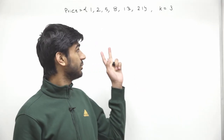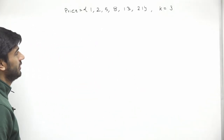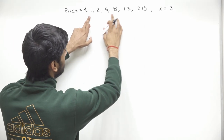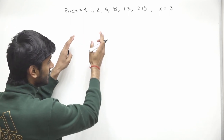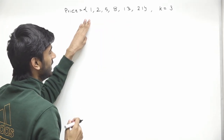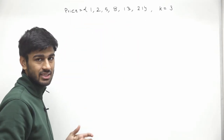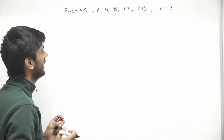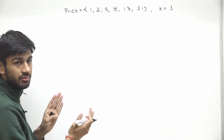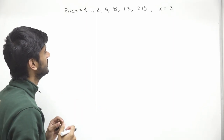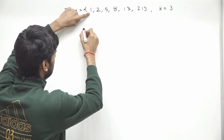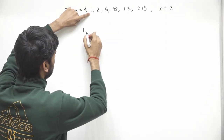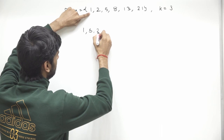Let's take an example to understand the problem statement. We are given 6 candies and k equals 3. We have to pick 3 candies from these 6 such that the tastiness is maximum. Let's pick candy with price 1, then 8, and then the last candy which is 21.